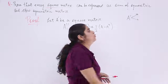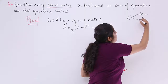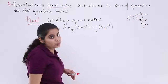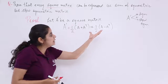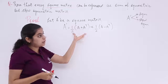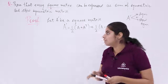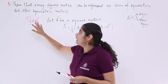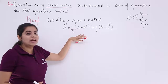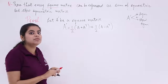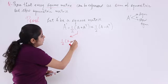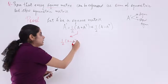So A was the sum of a symmetric and a skew symmetric matrix — basically the sum of these two factors. We will take each factor and prove that one is symmetric and the other is skew symmetric. The criterion is to take the transpose of the first factor, which is half into (A + Aᵀ), and take the whole transpose of it.